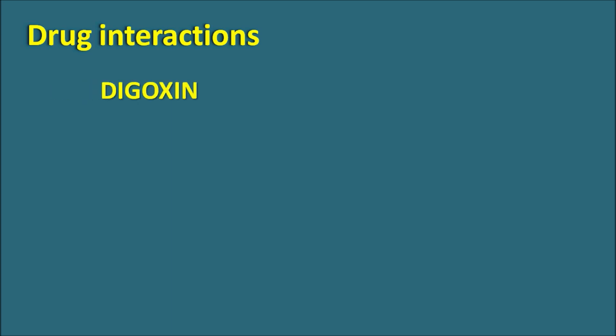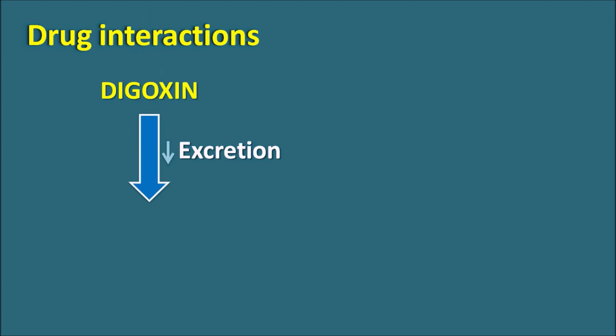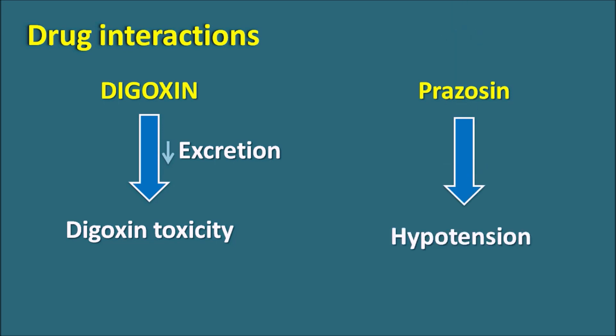What are the drug interactions? An important interaction is observed with digoxin, a cardiotonic that increases force of contraction. The interaction is not pharmacodynamic — rather, digoxin is excreted through the renal system, and verapamil can decrease digoxin excretion by inhibiting the P-glycoprotein pump. When verapamil is given with digoxin, digoxin levels in plasma increase, resulting in digoxin toxicity. Therefore, whenever verapamil is given with digoxin, the dose of digoxin should be reduced to prevent toxicity. Similarly, prazosin and other alpha-1 blockers (doxazosin, terazosin) are direct vasodilators producing hypotension by blocking alpha-1 receptors. When alpha-1 blockers are combined with verapamil, they can produce severe hypotension, so precaution should be taken.